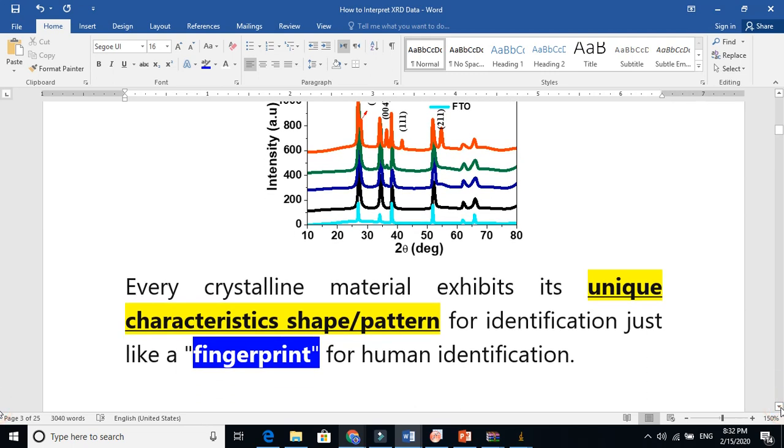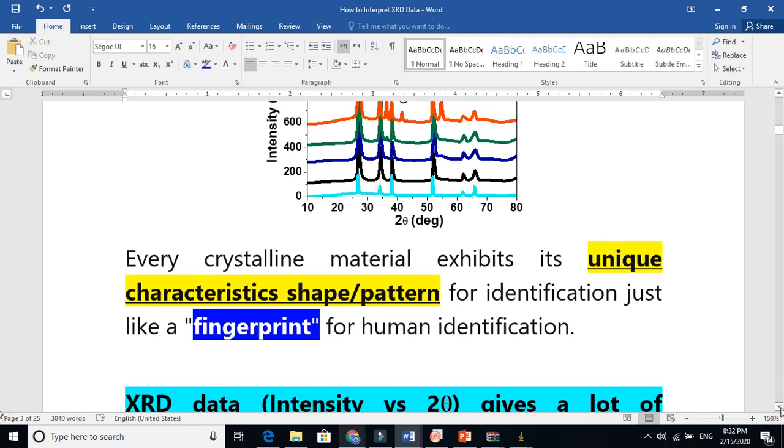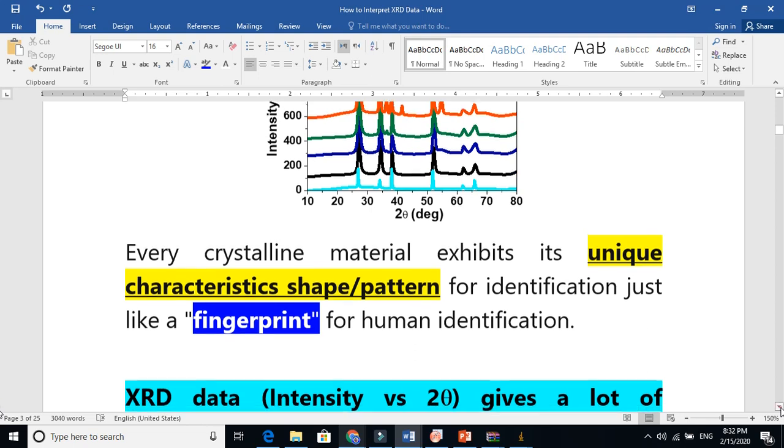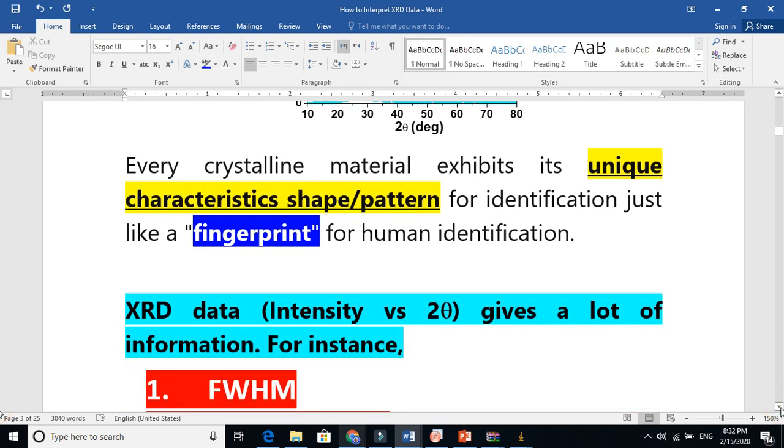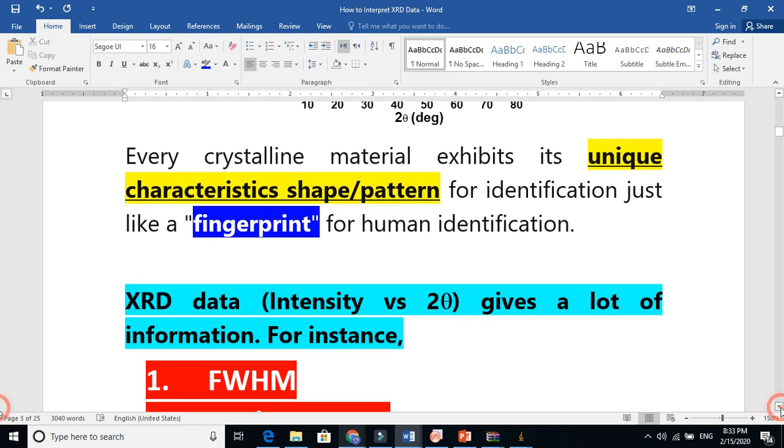If you take one sample and do the XRD, it will give a different graph. If you take another sample, another material, it will give a different graph. It is just like the fingerprint of a human being. The fingerprint we use for human identification. A similar approach, we use XRD for material crystal structure identification.